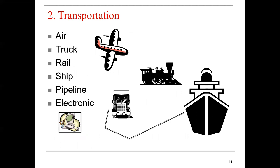Number two is transportation. We have multiple modes of transportation needed in the supply chain. If you're going across the sea, we need ships. If you are distributing within the nation, we can rely on trucks, trains, or airplanes depending on the type of product. Transportation is very important.